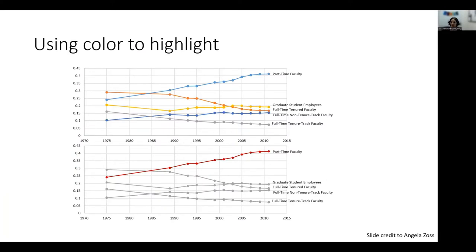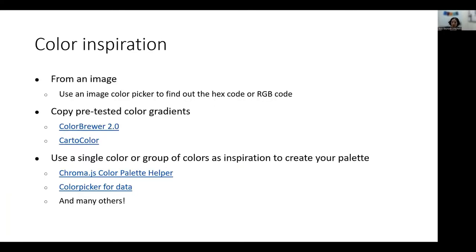You can also use color to highlight — for example, highlighting the increase in the number of part-time faculty. Or you can use color to group — using the same color for all groups that are increasing and all the groups that are decreasing, which highlights that the number of full-time tenured and tenure-track faculty are decreasing. When choosing colors, there are many places to draw inspiration from — from an image using a color picker to find the hex code or RGB code to put into Excel, or pre-tested color gradients from Color Brewer or Carto Color, or palette builders.